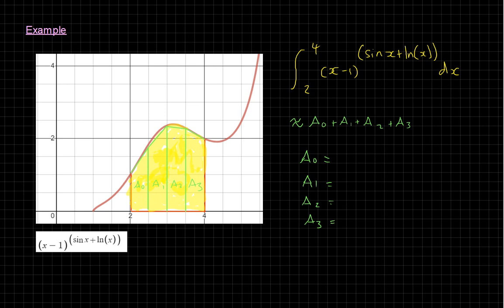The area rule for a trapezium is taking the average of the two parallel sides. For area A0, I take this length plus that length, divided by 2, multiplied by the width. Similarly for A1, I take those two lengths, add them together, divide by 2, and multiply by the width. The width is the same in all cases — it's the difference between 2 and 4, which is 2, divided by 4 strips, giving one half. So for all of these I'll be working out a half times whatever these two sides averaged are.